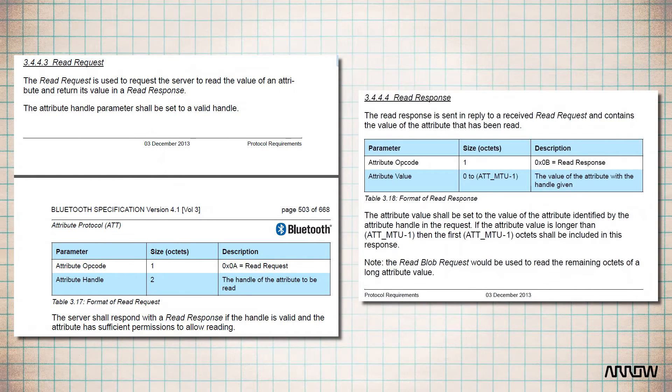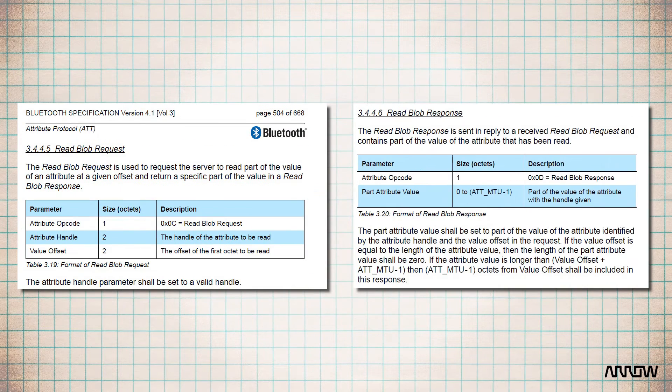It is important to know the MTU because it impacts the commands that must be used. For instance, let's assume a value of an attribute is 30 bytes long — it is longer than the default MTU of 23 bytes. To get the data, a read request with an attribute handle as a parameter is performed to get the first 22 bytes. Then a second command called a read blob — for binary long object — request is performed. This command has the handle of the attribute and the offset as parameters. With the offset of 22, the last eight bytes of the attribute are sent.